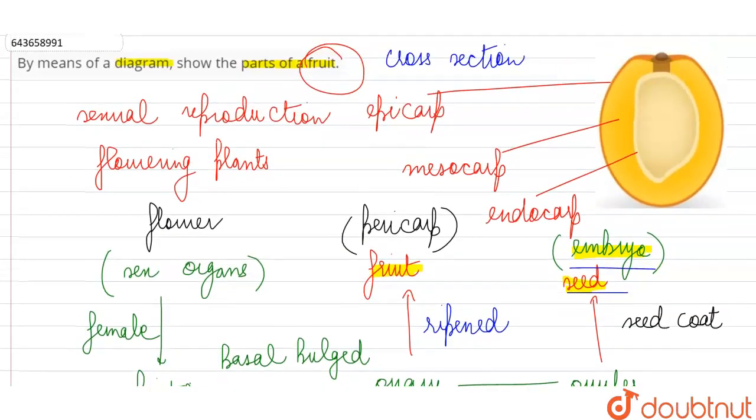So in this diagram, in this cross section of the mango fruit, what can we see? What the different parts of the fruit are. We've got the seed here. There's just a single seed in the fruit, but there are many fruits which have large numbers of seeds. Then we have the fruit wall or the pericarp which is enclosing this seed, and it is further divided into the three wall layers: outermost epicarp, middle mesocarp, and the inner endocarp.